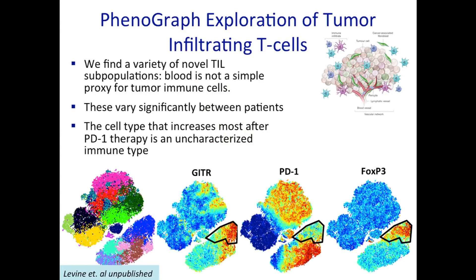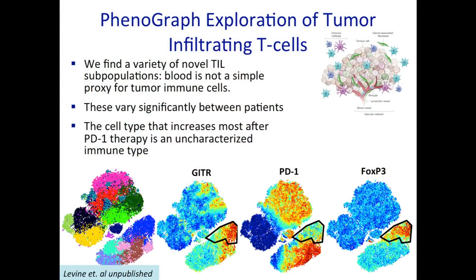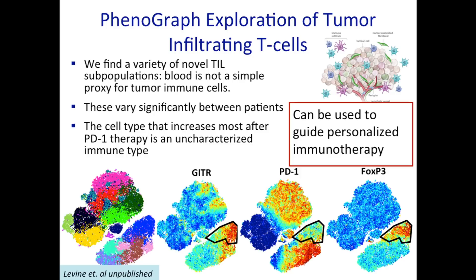We applied this to immunotherapy data — looking at lymphocytes inside a tumor — and we actually see many cell types. It would be limiting to expect we'd find the same cell types as in healthy blood. Each patient has different subtypes. This PD1, a checkpoint brake expressed in some tumors — we actually have 10 such brakes. Different tumors have different brakes expressed in their different subtypes. This way, we could characterize tumors in a patient-specific manner, leading to a personalized immunotherapy.